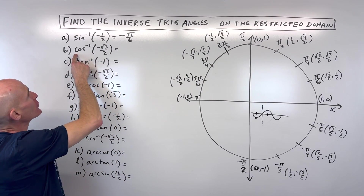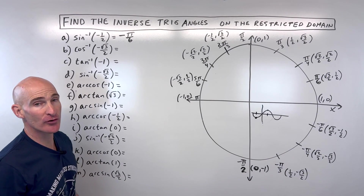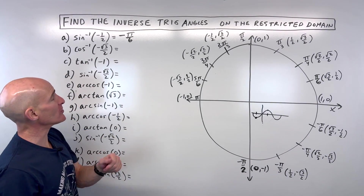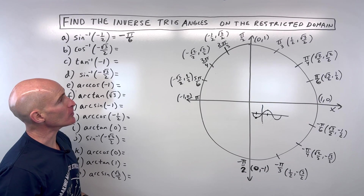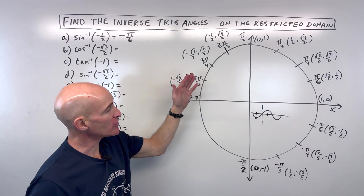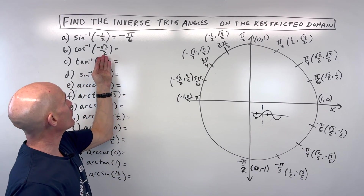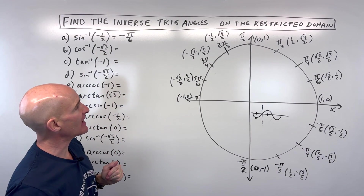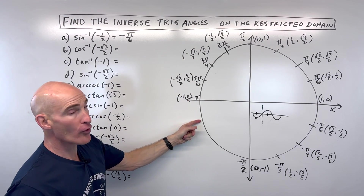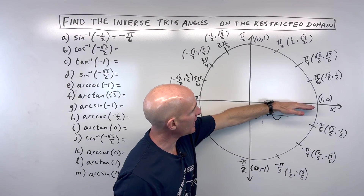For letter B: what's the cosine inverse of negative root three over two? Another way of saying this is cosine of what angle equals negative root three over two? Remember, cosine on the unit circle refers to the x-value. So we're really saying where is x equal to negative root three over two? It would be in two places on the unit circle.